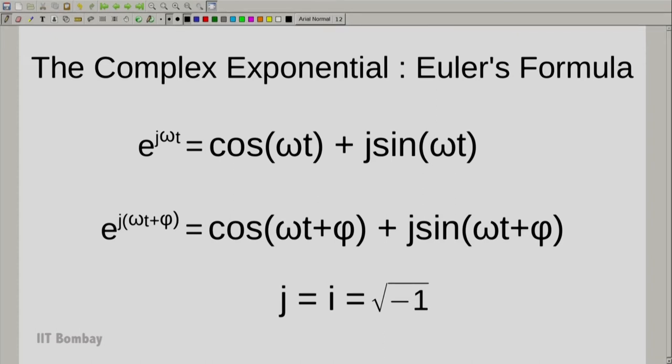Those of you are mathematicians and not electrical engineers would probably wonder what j is. In electrical engineering we use j which is the same as i that is the square root of minus 1. We do not use i very often because i is also used for current and we do not want to confuse notation.